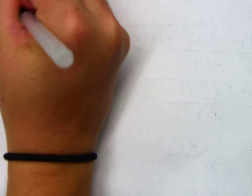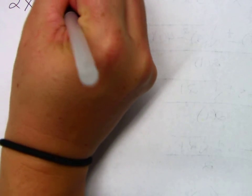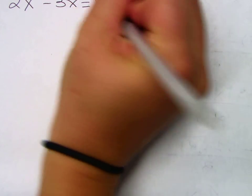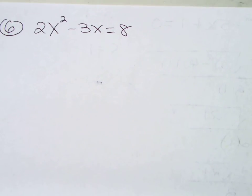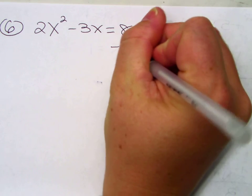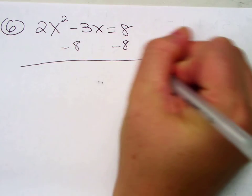Alright, last one. Number 6. 2x squared minus 3x equals 8. Sorry. Now, how is this different? Two problems. Number 1, there's a number in front of x squared. A is no longer 1. Second issue, do we have equals 0? No. You need to subtract the 8 on both sides. You need a 0 on one side.